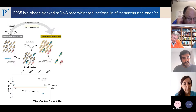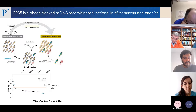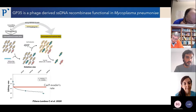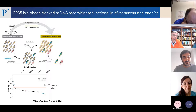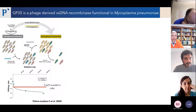The editing rate follows an exponential logic depending on the deletion size. Short deletions are obtained quite efficiently, but large deletions are obtained with lower frequency. The Cas9 evader rate is around 10 to the minus 3, meaning that everything with an editing rate below 10 to the minus 3 is difficult to select with this system.